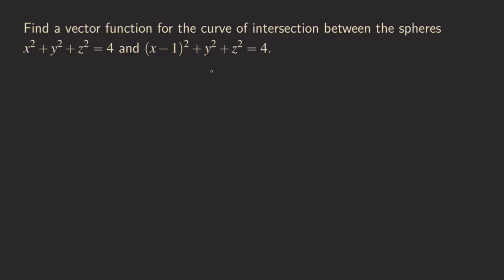Hello everyone. Today let's talk about finding the parametrization for the curve of the intersection between two spheres. As you can see, the two spheres have the same radius — they both have a radius of two. This one is not centered at the origin because it's shifted one unit away from the origin in the X direction.